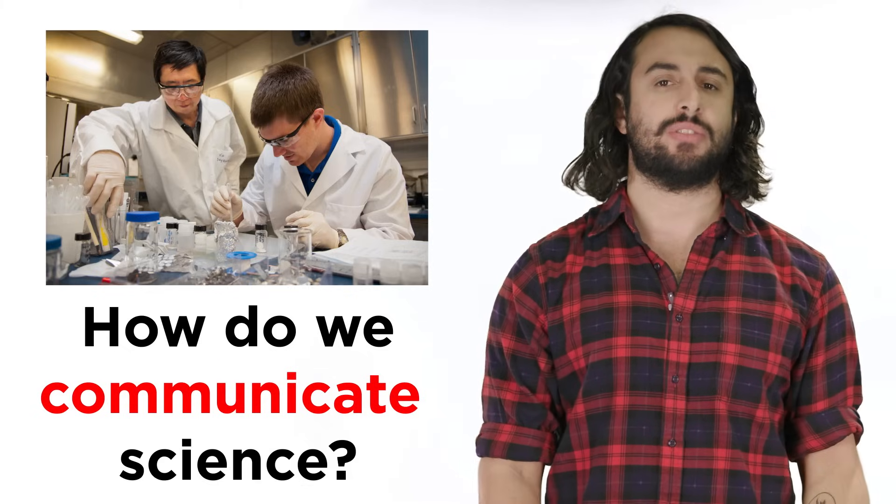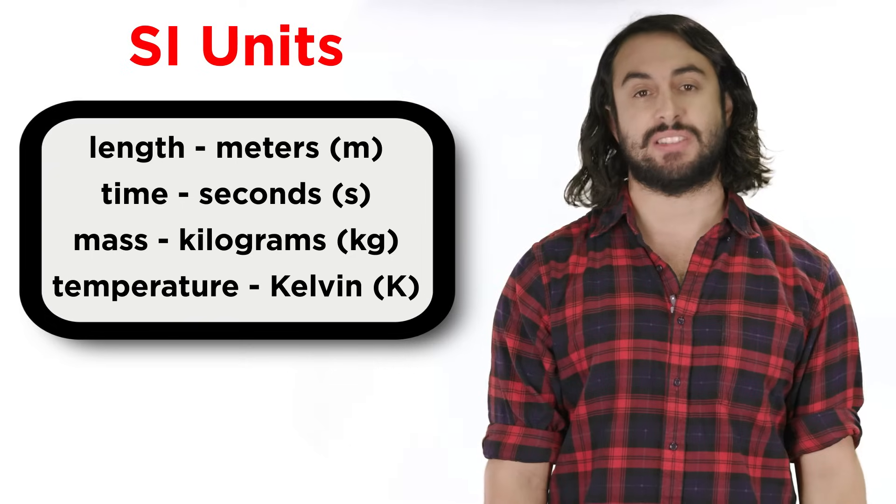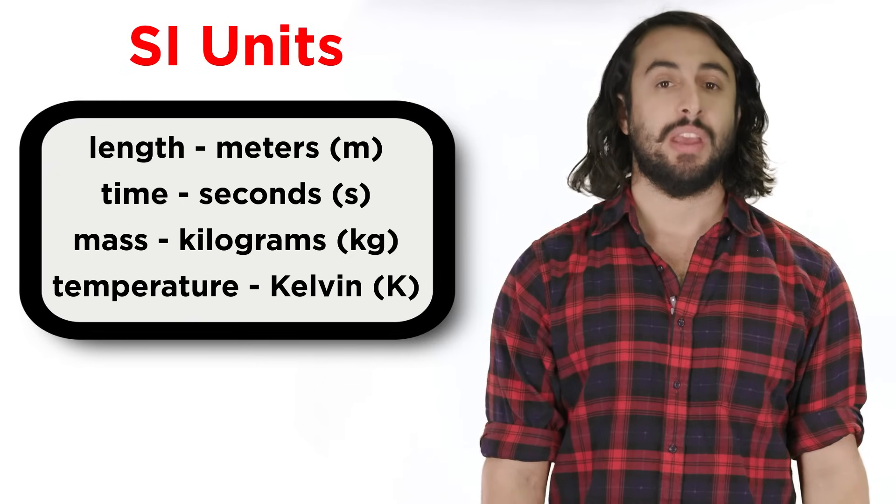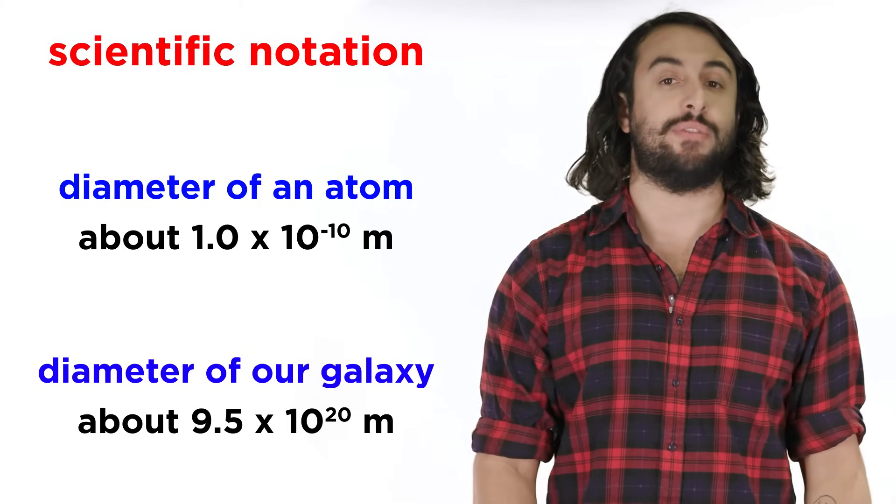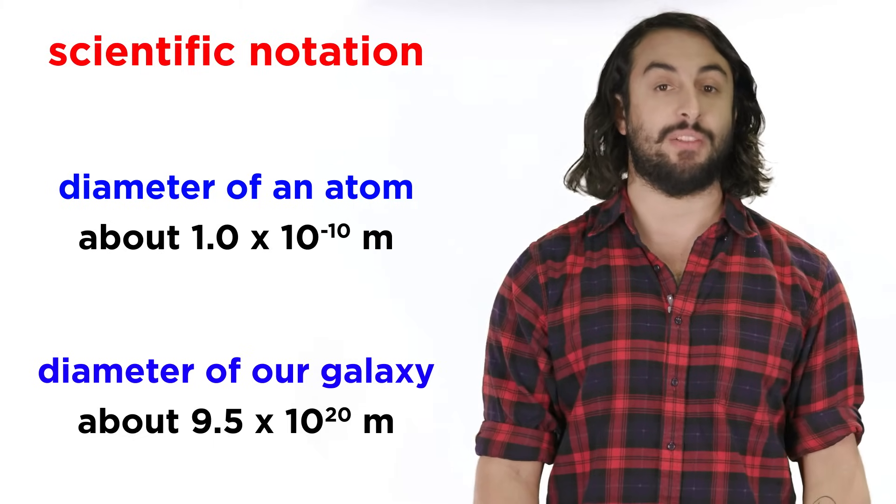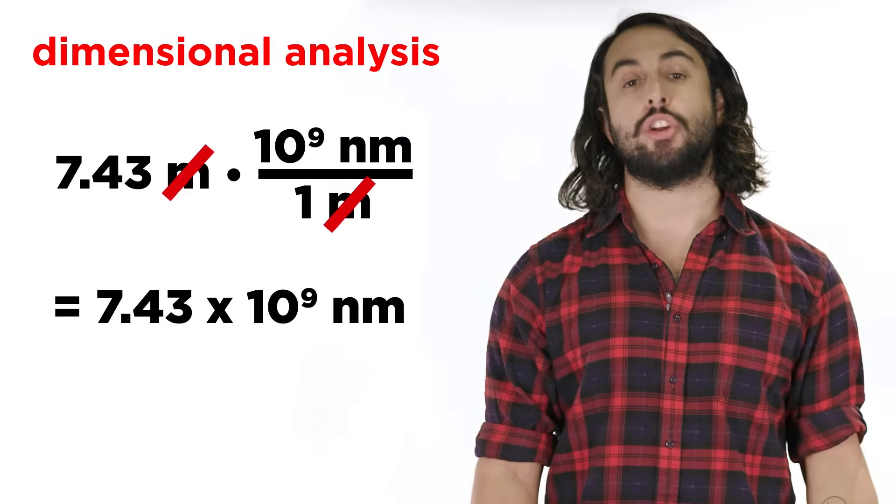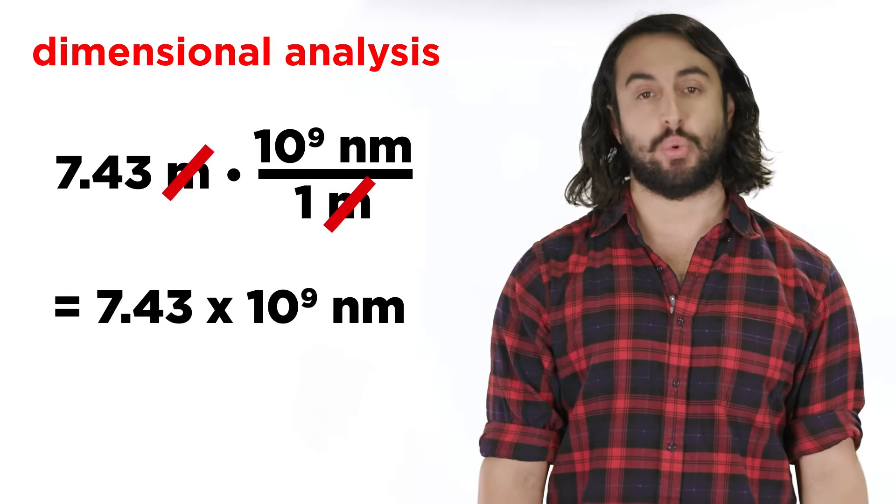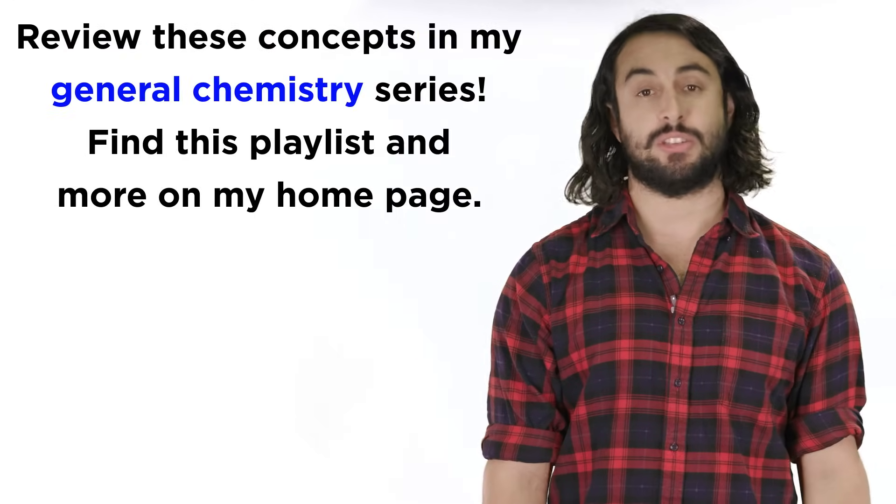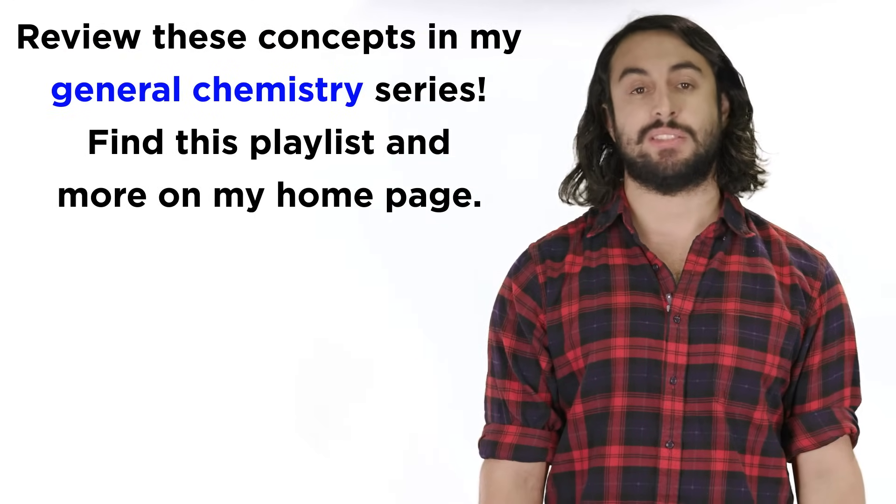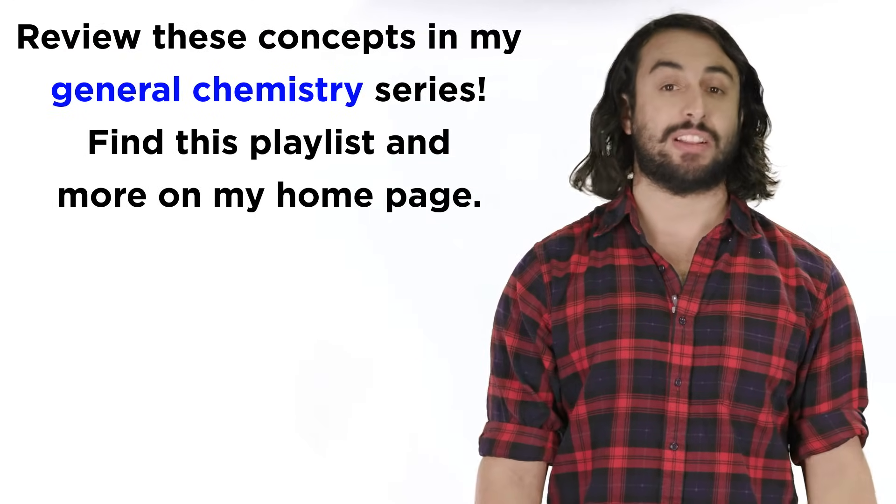So we must first know about things like the units of measurement that the scientific community uses, scientific notation, which is used to report very small and very large numbers that will be common in physics, and dimensional analysis for converting between units. Luckily, we have already gone over these in my chemistry series, but in case you missed those tutorials, you may want to check them out at some point.